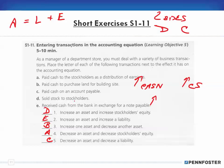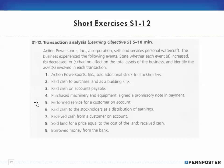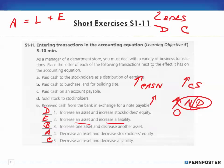Transaction E: received cash from the bank in exchange for a note payable. Cash is going up — that's an increase in an asset. A note payable is a liability account, so owing more means a liability is increasing. So E is an increase in an asset and an increase in a liability.